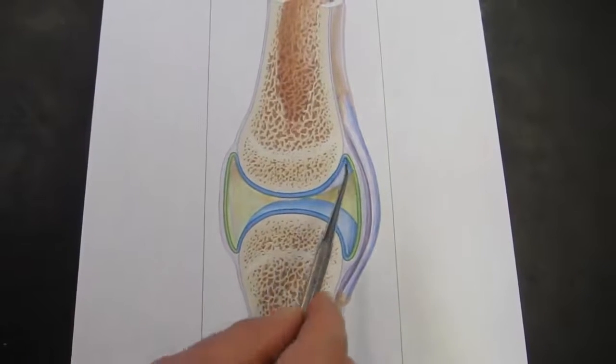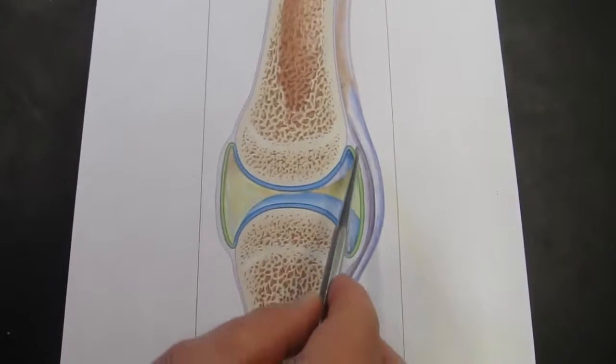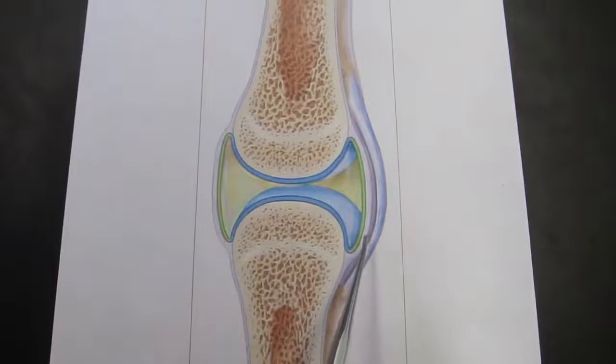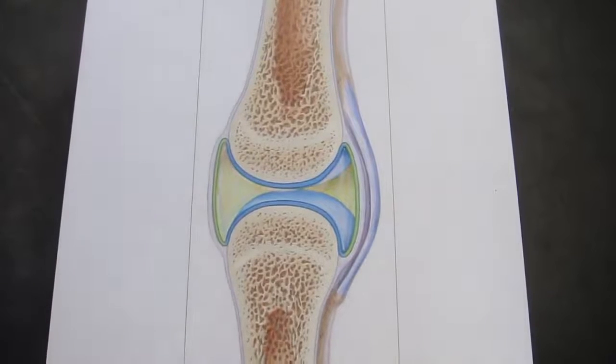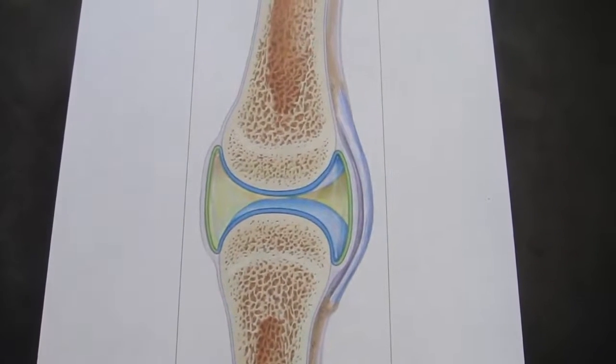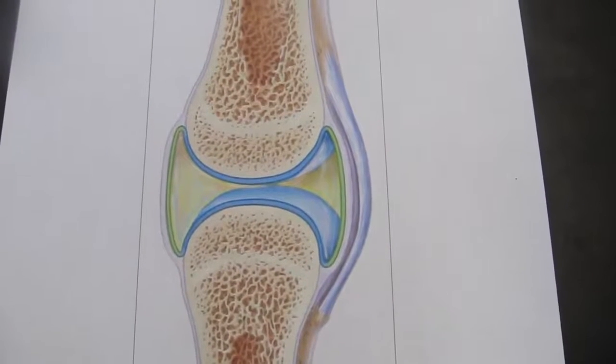Now, as we go past the green layer to this kind of light purple layer, that is the other portion of the articular capsule, which is the fibrous layer. So the fibrous layer of the articular capsule is really more of a structural component.